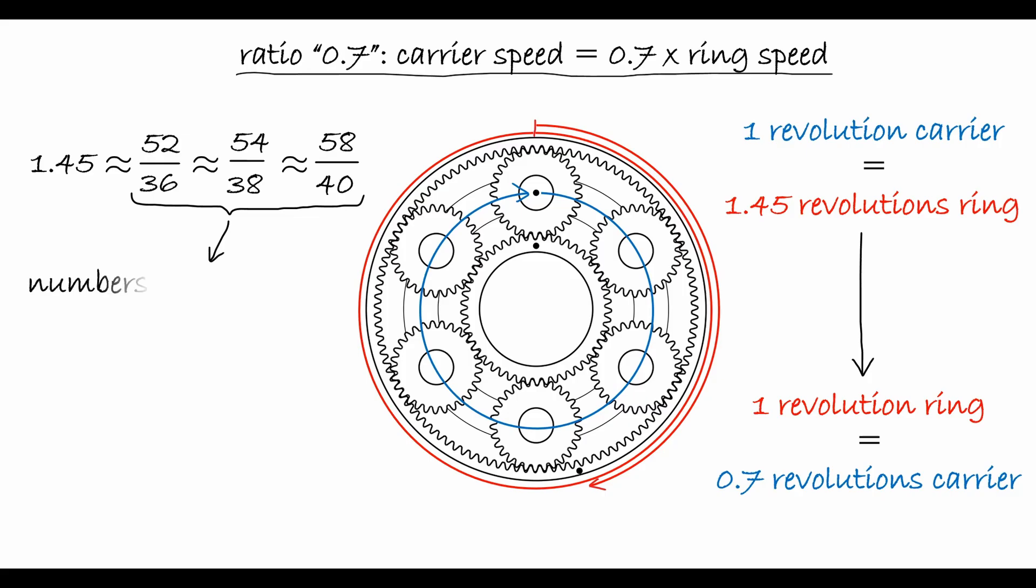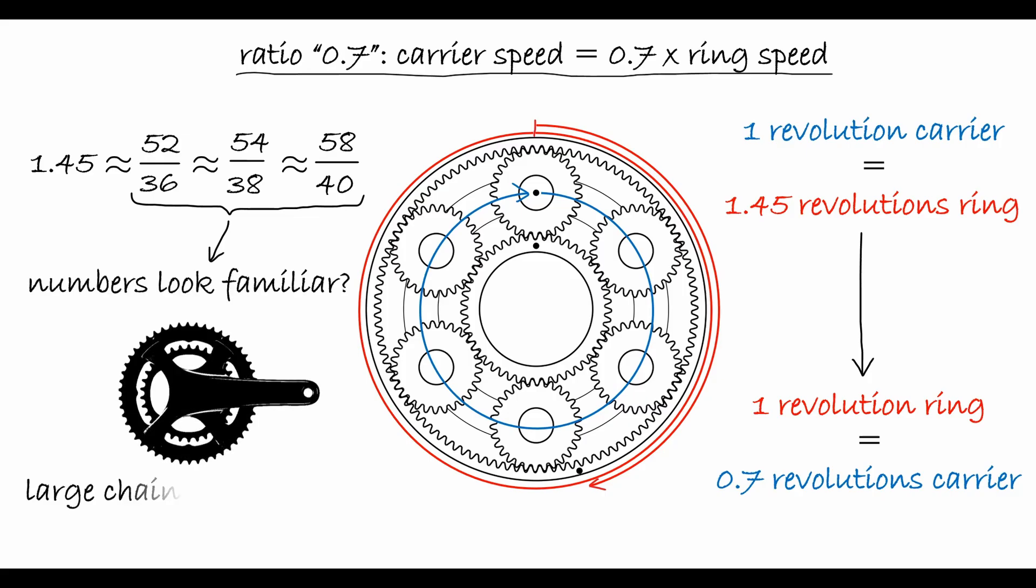The number 1.45 can be expressed using any of the following fractions, which may look familiar to a cyclist riding a so-called 2x setup, where a large chain ring of, say, 52 teeth is combined with a smaller chain ring of, say, 36 teeth.